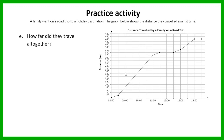The next question: how far did they travel altogether? On the graph, their initial distance was 0. They started at 0, and by the time they reached their destination, the distance they had traveled was 440 kilometers. So that is how far they traveled altogether — 440 kilometers.